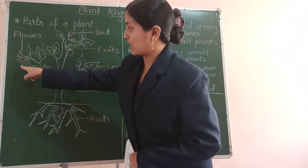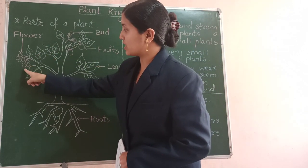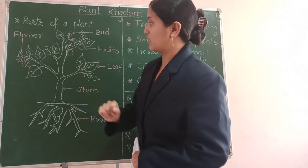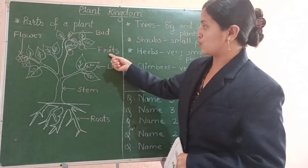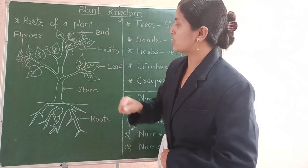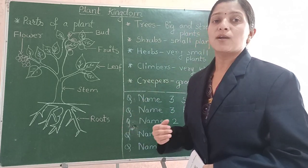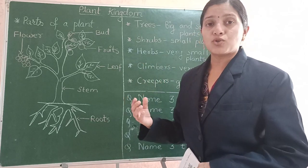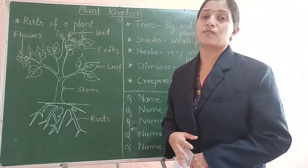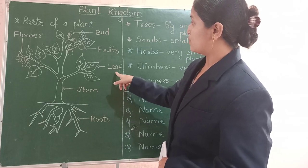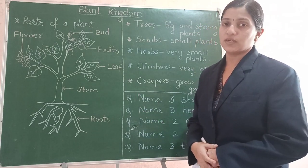Here is the bud and here are the flowers. When the bud blooms fully, it becomes a flower. After the flowers, the flowers generate fruits. These fruits have seeds in them. Because of these seeds, a new plant can be produced. So these are the six parts of the plant: roots, stem, leaves, bud, flowers and fruits.